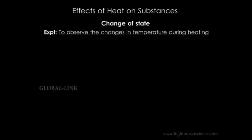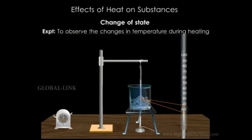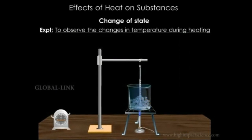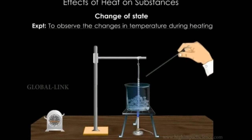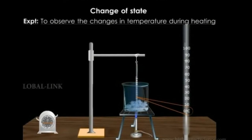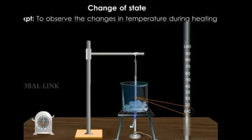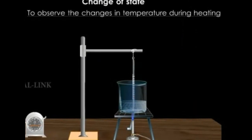Now let's go back to the effect of heat on substances — the first effect is change of state. We start with an experiment to observe the change in temperature during heating. We take some ice cubes in a beaker, suspend a thermometer into the ice cubes, and note its temperature: zero degrees Celsius. We heat the ice cubes and record the temperature after every minute, stirring constantly so the temperature is uniform. We observe that the thermometer reading remains constant at zero degrees Celsius even though heat is being supplied, until all the ice melts into water.